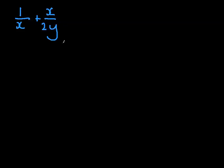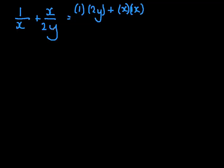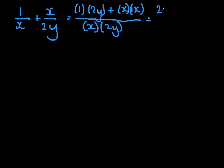So what was our rule for this? We had to cross-multiply the denominators and times these together. So we'd get 1 times by 2y, plus x times by x, all over x times by 2y. Now if we just times this all out: 1 times 2y equals 2y, plus x times x equals x squared, all over x times 2y equals 2xy. And that has been simplified with that simple rule.